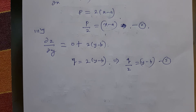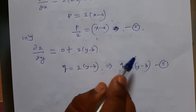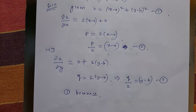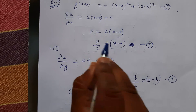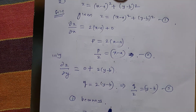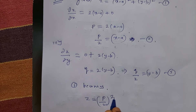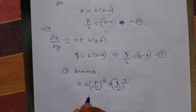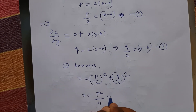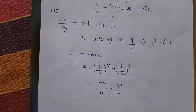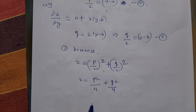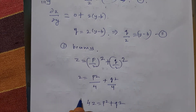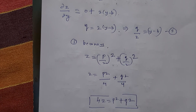Now in the last step I eliminate the constants by substituting x - a = p/2 and y - b = q/2 into equation number 1. Equation 1 becomes: z = (p/2)² + (q/2)² = p²/4 + q²/4. Taking LCM as 4 and cross-multiplying: 4z = p² + q². This is the required answer.